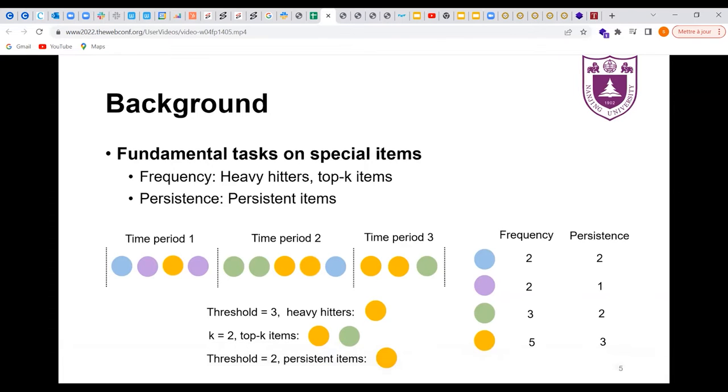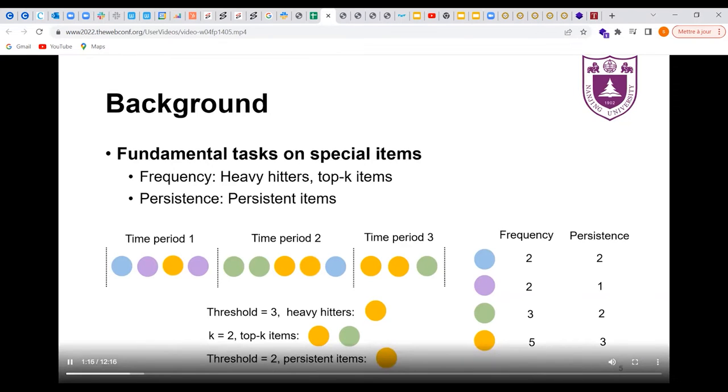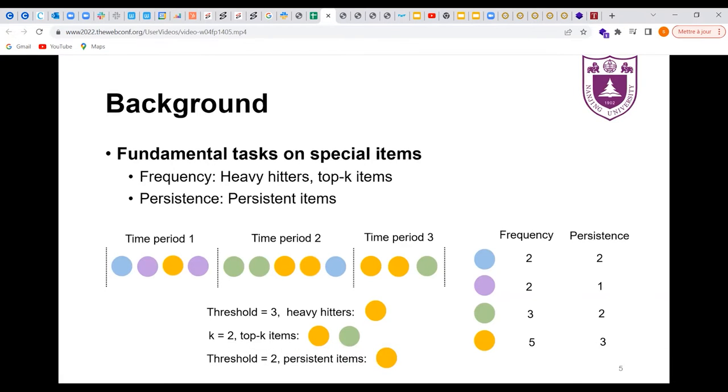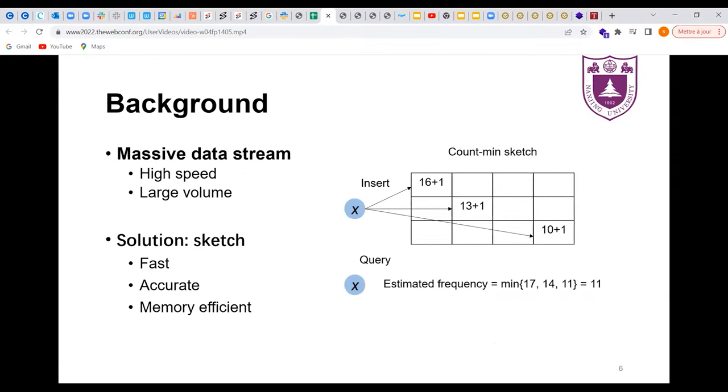As shown in the slide, the data stream has four different colors of items. We can obtain their frequencies and persistence in the right table. As we set the threshold, we can find the special items. Due to the high speed and large volume of data streams but limited memory we can use, we cannot record all of the data to extract the information we need.